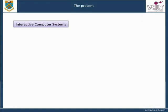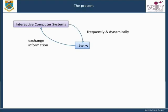Interactive systems are systems that involve users in a direct way. In interactive systems, the user and computer exchange information frequently and dynamically. Norman's evaluation is a useful way of understanding the nature of interaction.